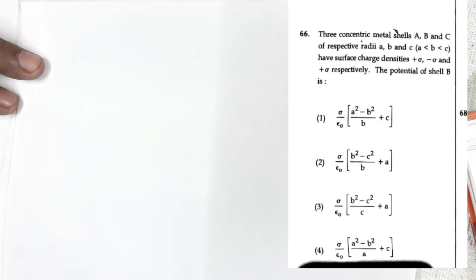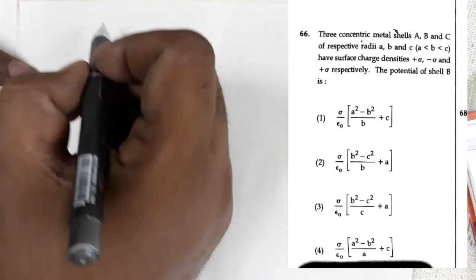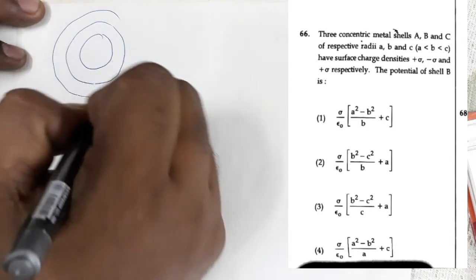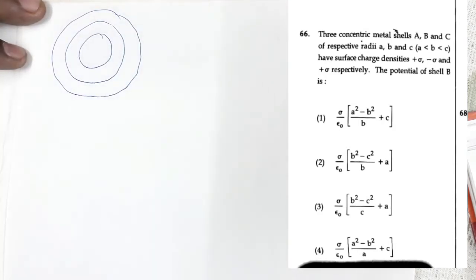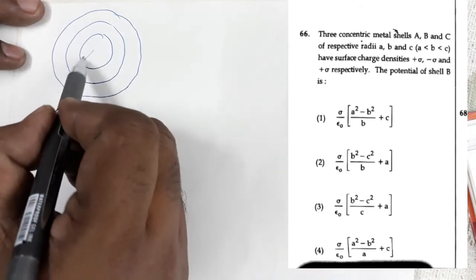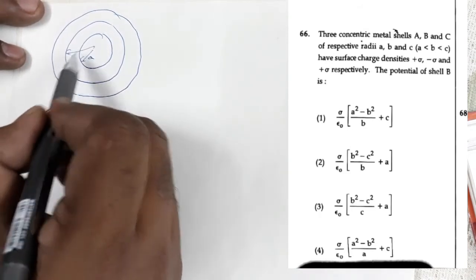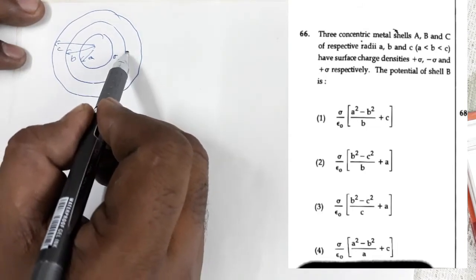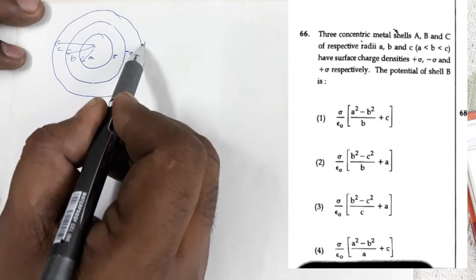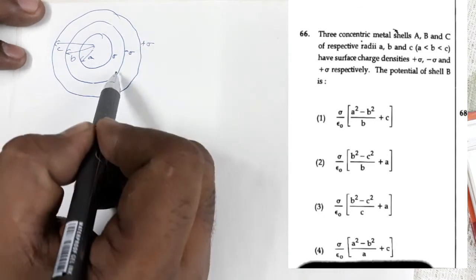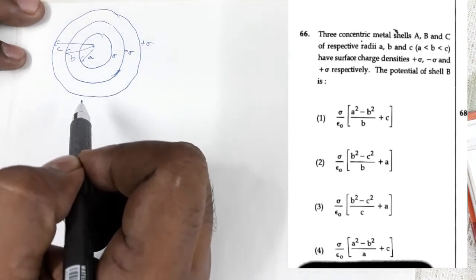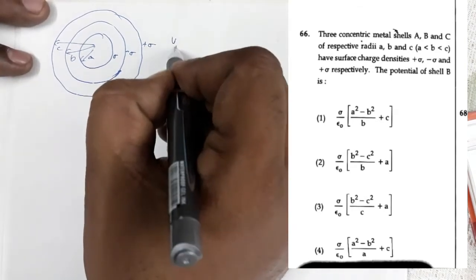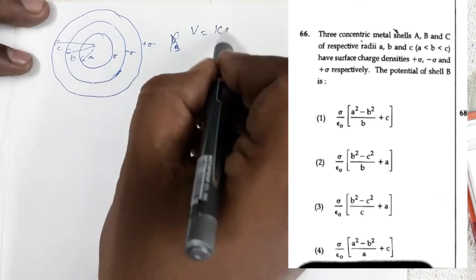Question number 66: we have three concentric spheres with radii a, b, and c, having surface charge densities +σ, −σ, and +σ respectively. You have to calculate the potential on the surface of shell b. The general formula is V = kQ/r.